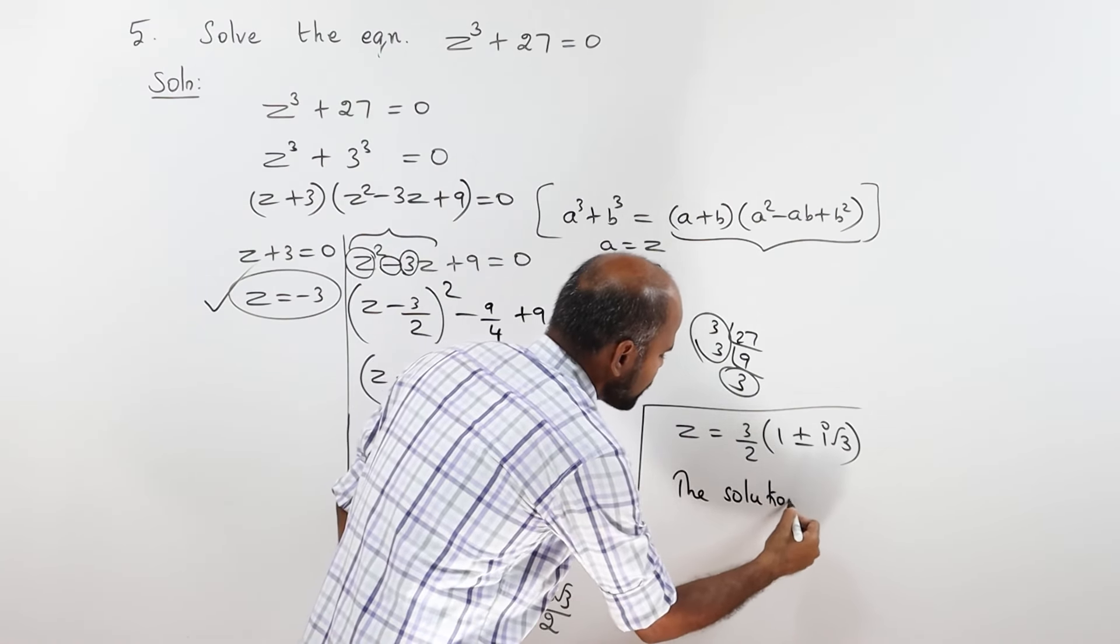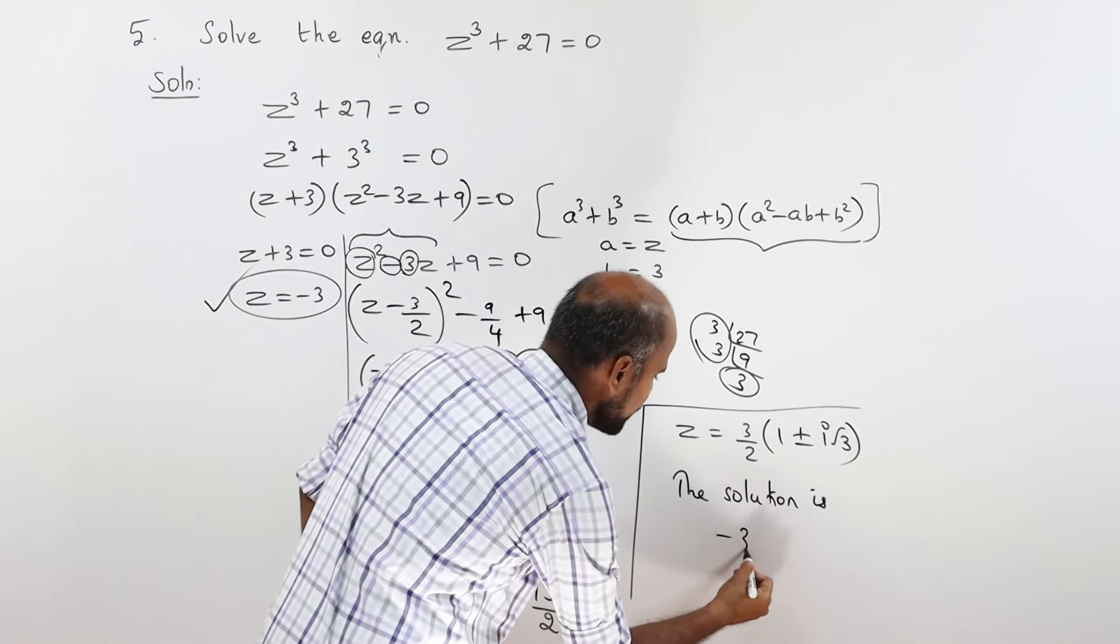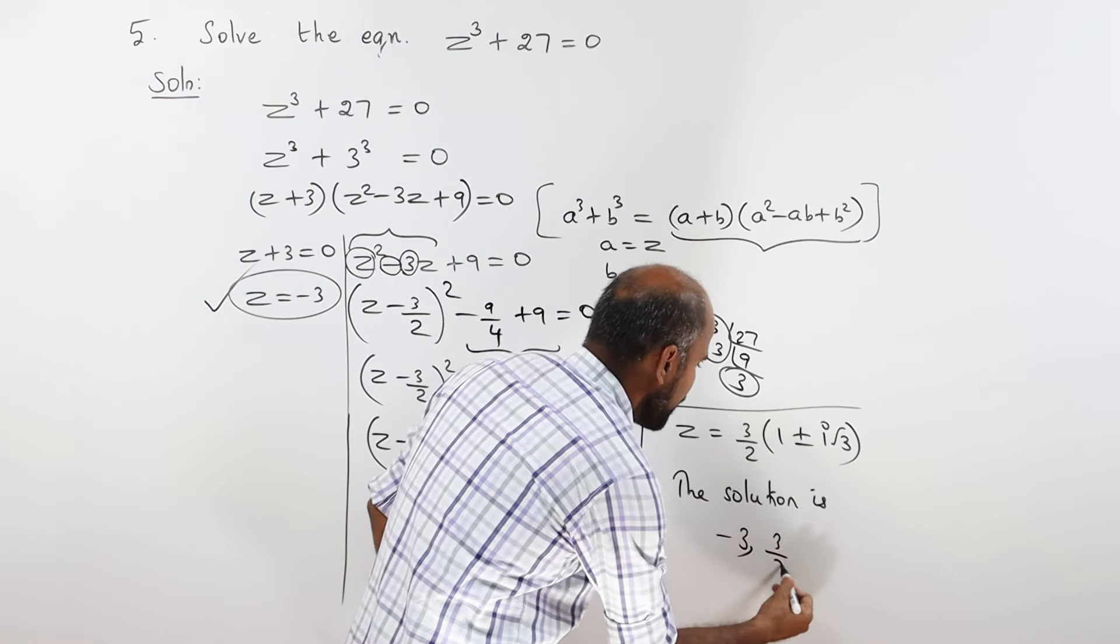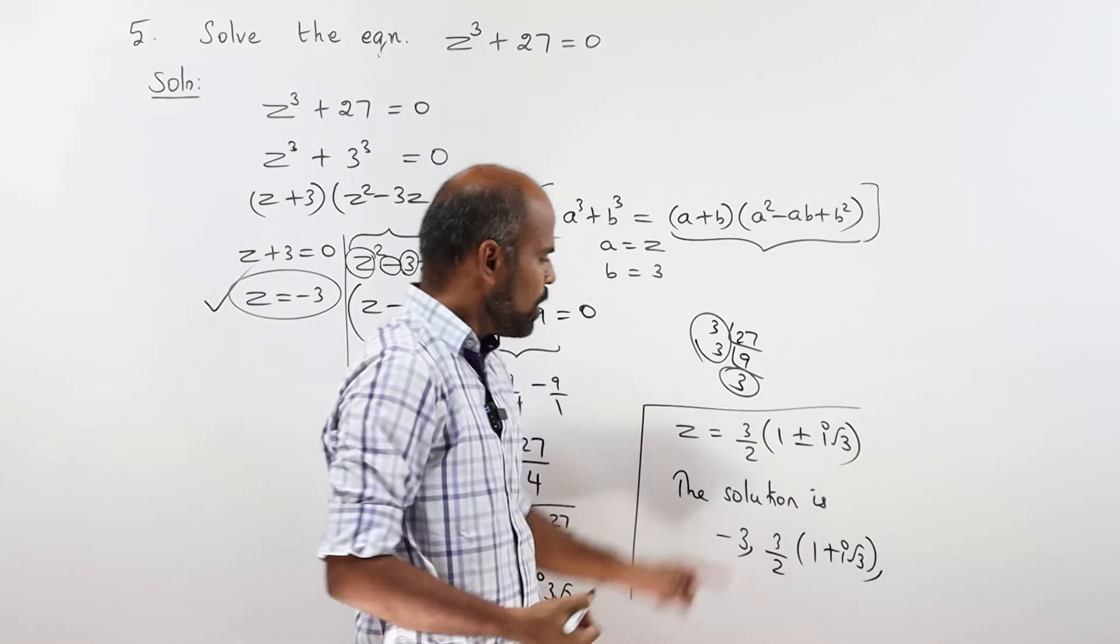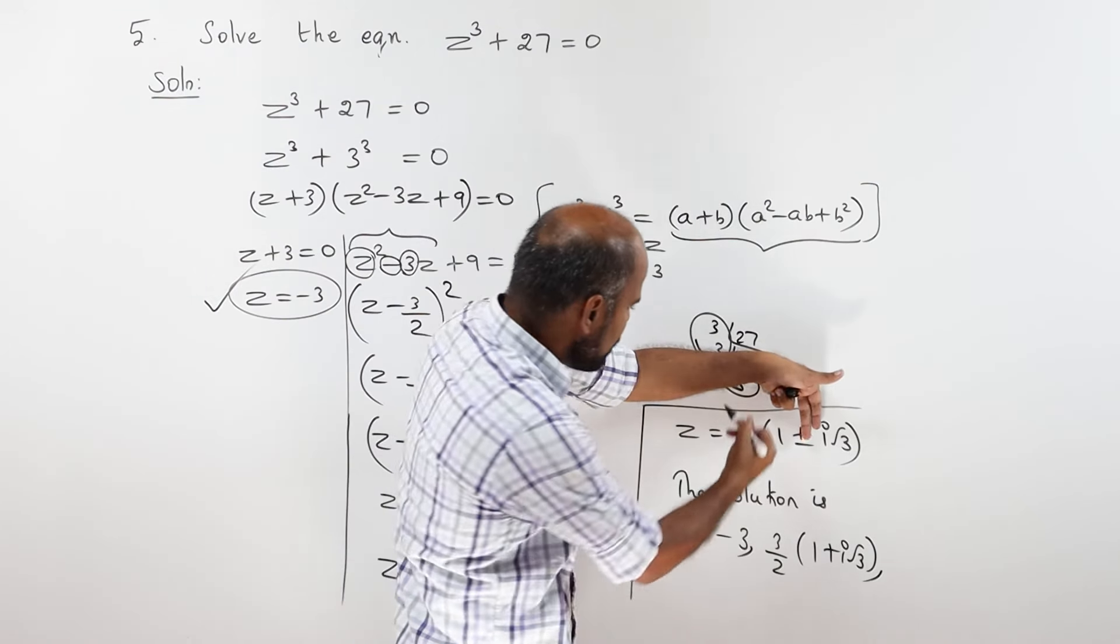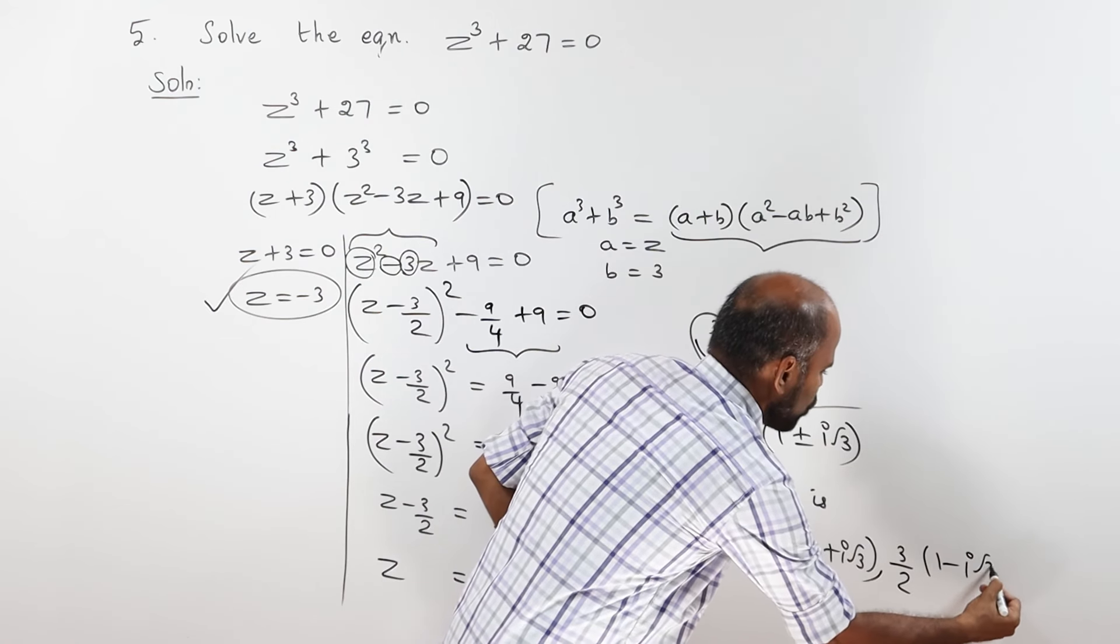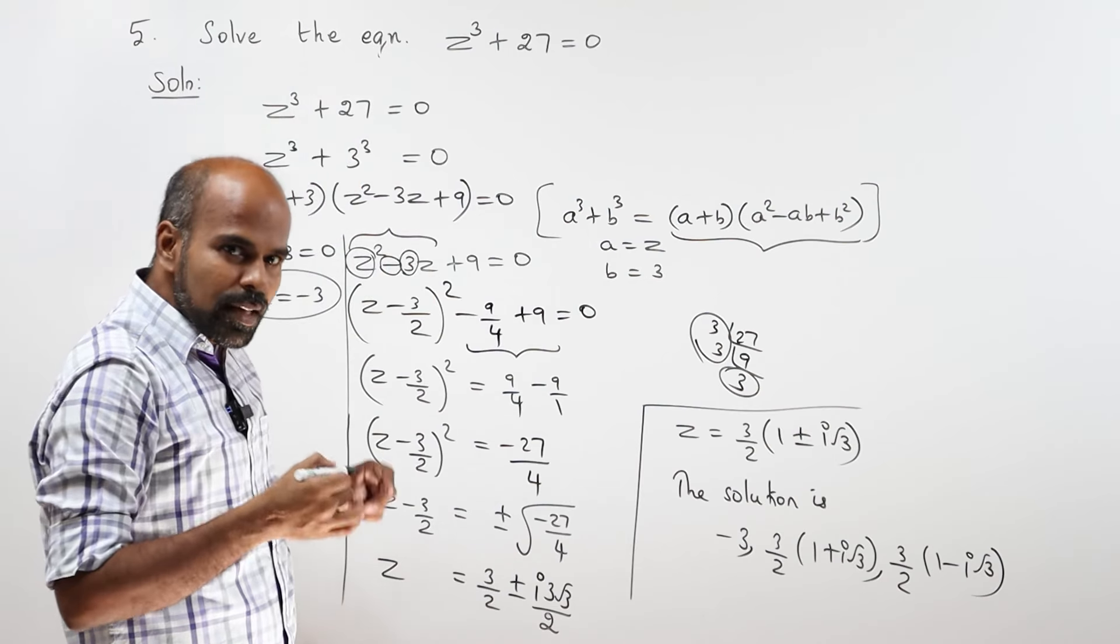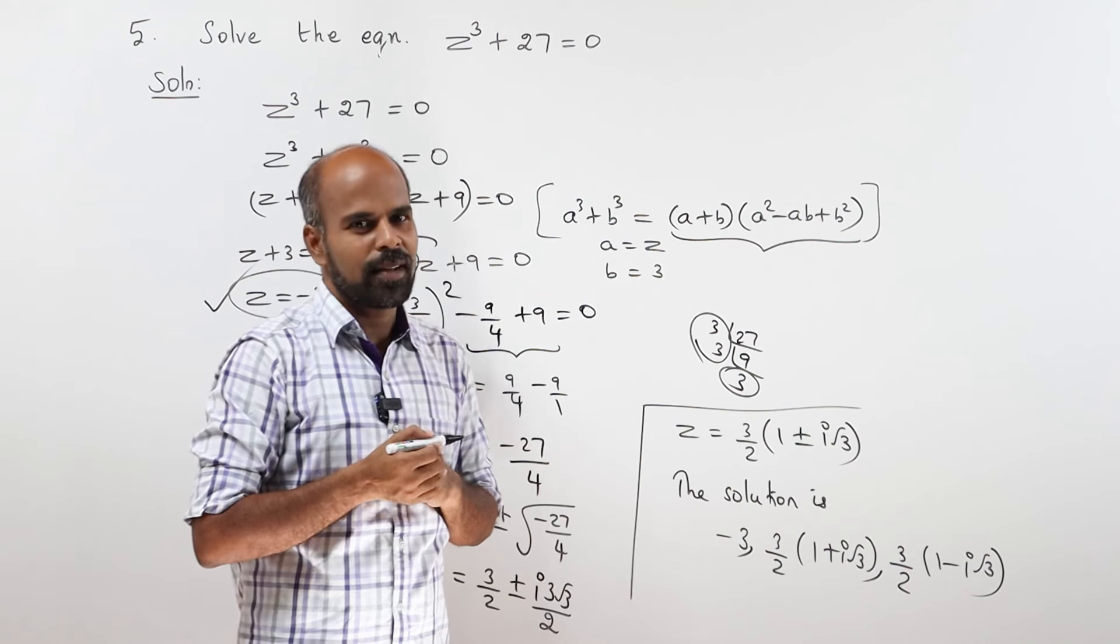And the solution is: one answer is minus 3. Another answer, plus: minus 3 by 2 into 1 plus i root 3, comma. Now minus: minus 3 by 2 into 1 minus i root 3. If you follow this working rule, we get same result. They will give full mark. Thank you.